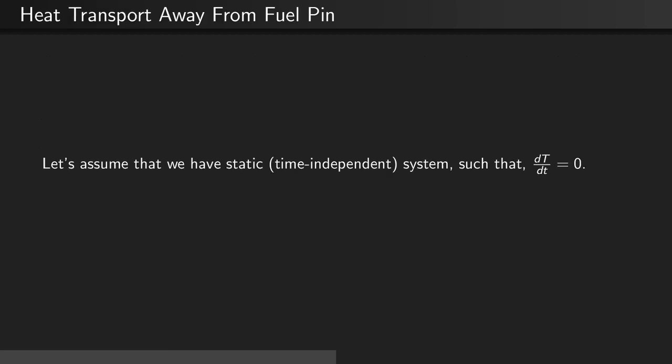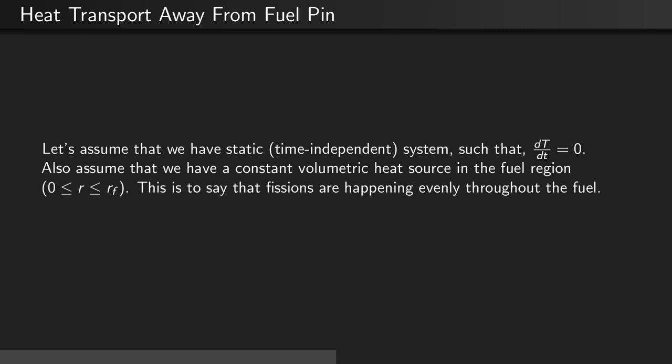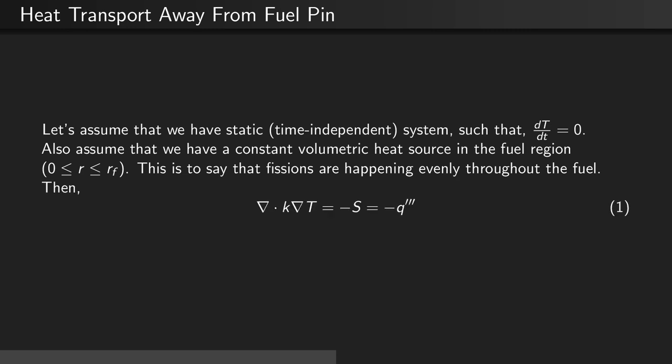Let's assume that we have a time-independent system so that dT/dt is equal to zero. Let's also assume that we have a constant volumetric heat source in the fuel region, that is, where the radius is less than the fuel radius. Having a constant volumetric heat source is the same as saying that fissions are happening evenly everywhere throughout this fuel region. Then, the divergence of the thermal conductivity times the gradient of the temperature is equal to the negative of the heat source, which in our case is equal to the negative of the volumetric heat rate, q triple prime.